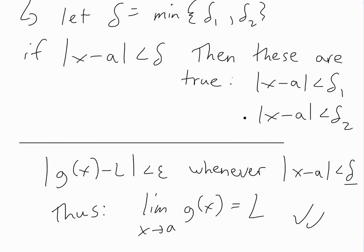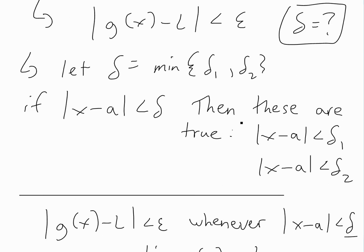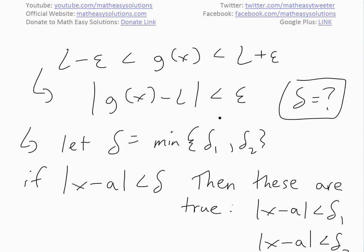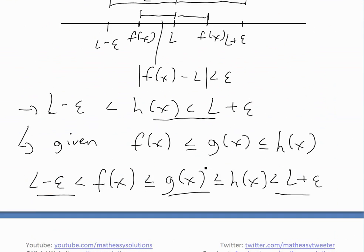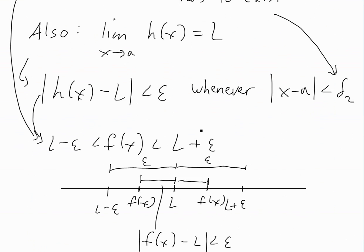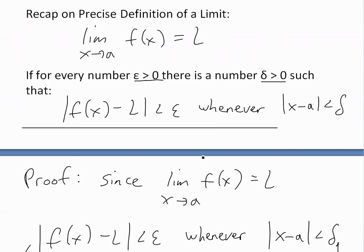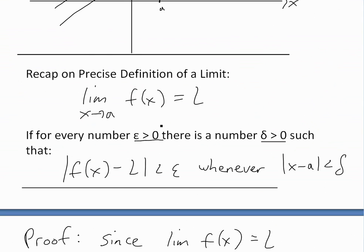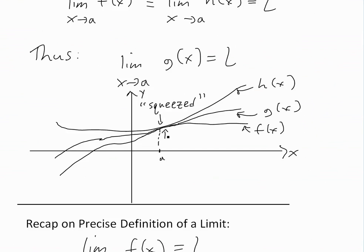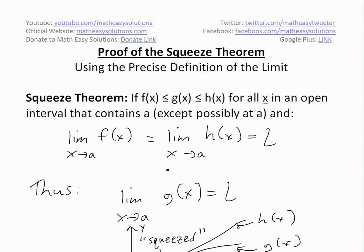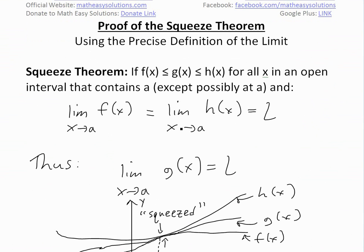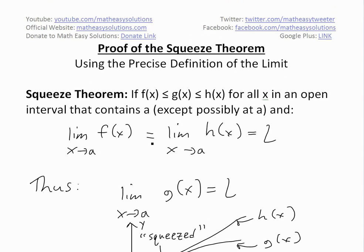That's all for today. Hopefully you learned from this rather abstract proof, but once you get the idea of the precise definition, this becomes really straightforward. It's just an abstract definition — a bit confusing — but that's why I make sure you watch my earlier videos on the precise definition of a limit. You can download these notes in the Dropbox link below, and stay tuned for another Math Easy.